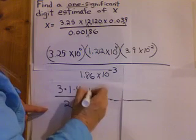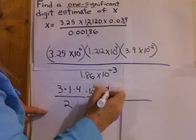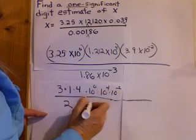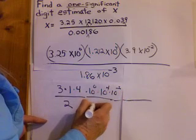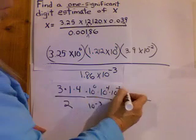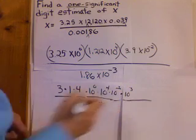So, I have times 10 to the 0, times 10 to the 4th, times 10 to the negative 2. And on the bottom, I have 10 to the negative 3. Hey, I could move this up and call it 10 to the 3rd. That makes it easier work.